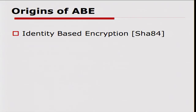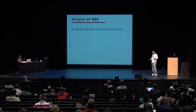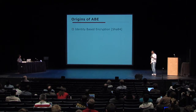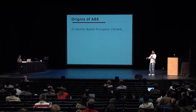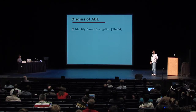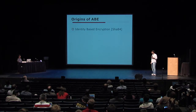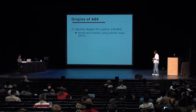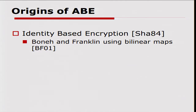Let me start with the origins of attribute-based encryption. Going back to 1984, Shamir introduced this notion of identity-based encryption. The idea there is that we're not encrypting, unlike public key cryptography, just to some specific public keys, but to identities of people. So I can encrypt to the name of a person and then he can decrypt based on that. It was finally realized by Boneh and Franklin in 2001.